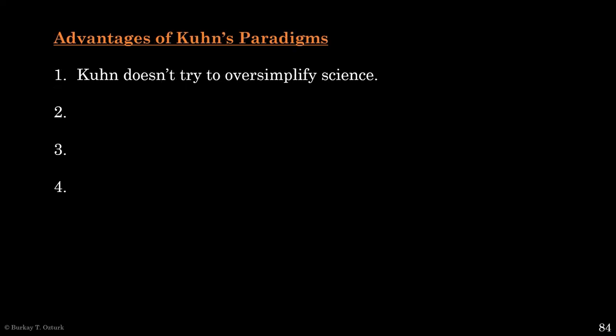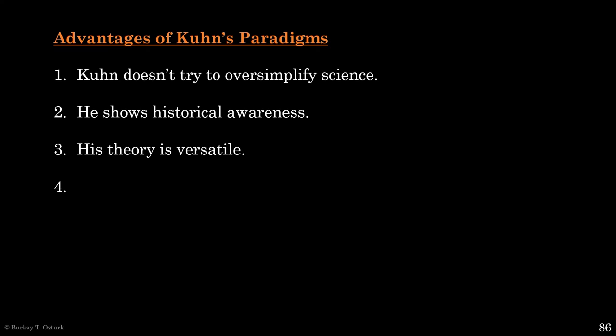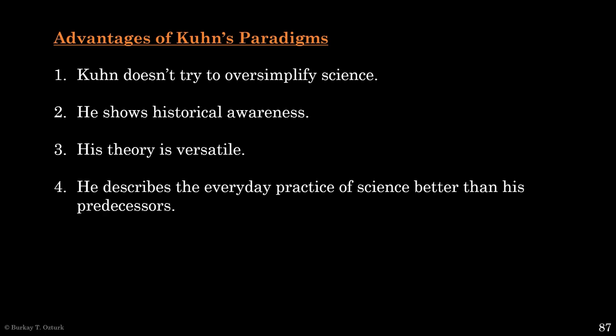Kuhn's vision of science as paradigms and revolutions is attractive in some respects. It doesn't try to oversimplify — if anything, he is a bit heavy on complexity. He shows lots of historical awareness and routinely brings in dozens of examples to hammer in a point. Just reading a single book by him would be as enlightening as a course in the history of science. What's more, his theory is extremely versatile: whereas inductivists and falsificationists focus solely on the logical structure of science, Kuhn is equally interested in the anthropology, psychology, and sociology of science.